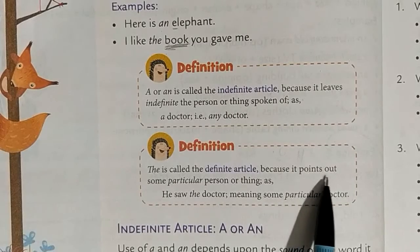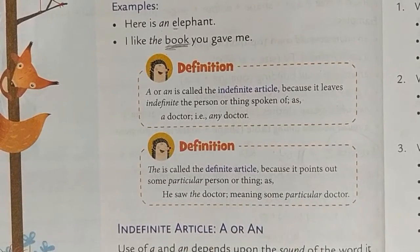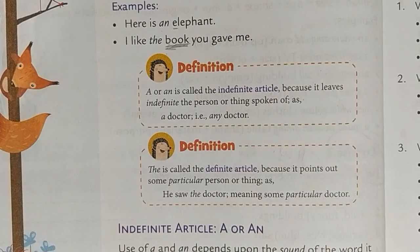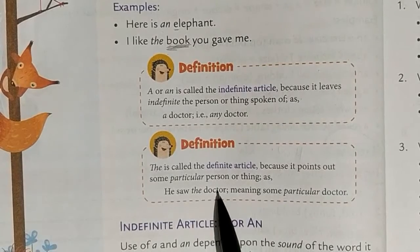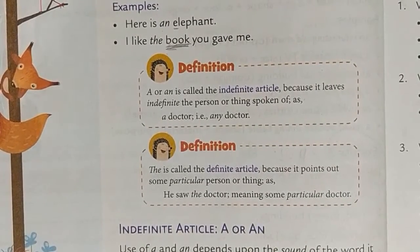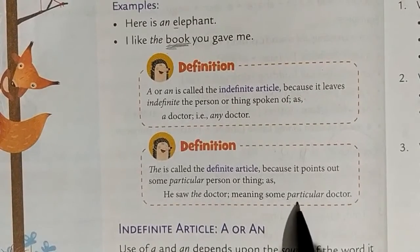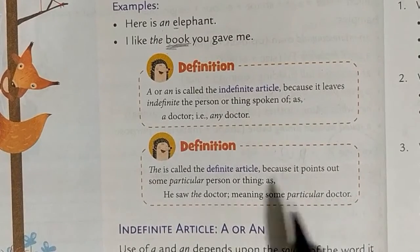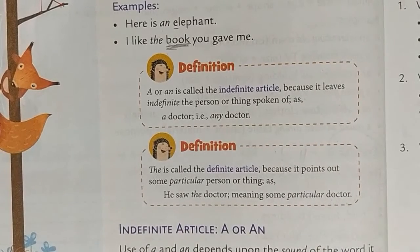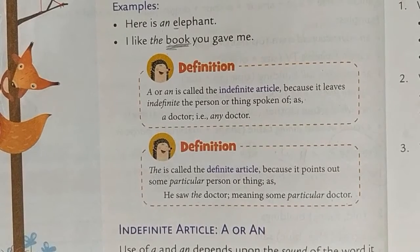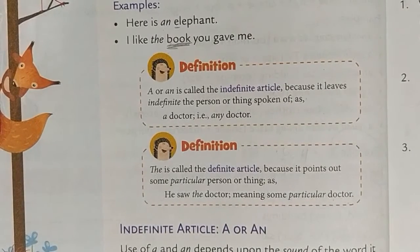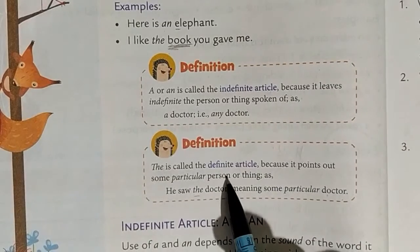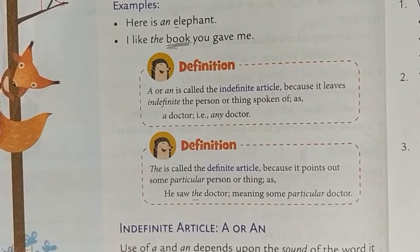'The' is called the definite article because it points out some particular person or thing. For example, 'he saw the doctor' — 'the doctor' means a specific doctor. If someone asks 'did you see a doctor?' that means any doctor. But answering 'he saw the doctor' means he met a particular doctor, and it is clear which doctor he met. That's why 'the' is used — it comes under the definite article.